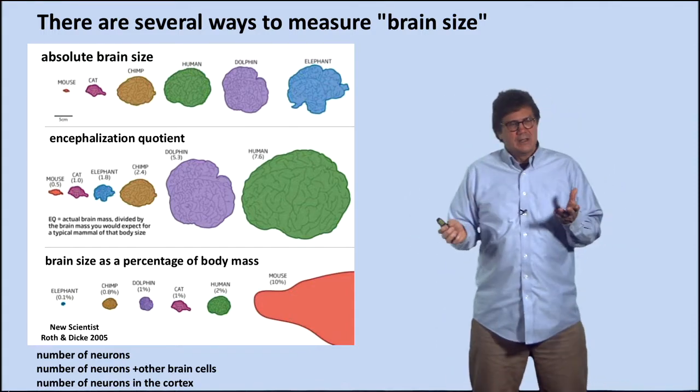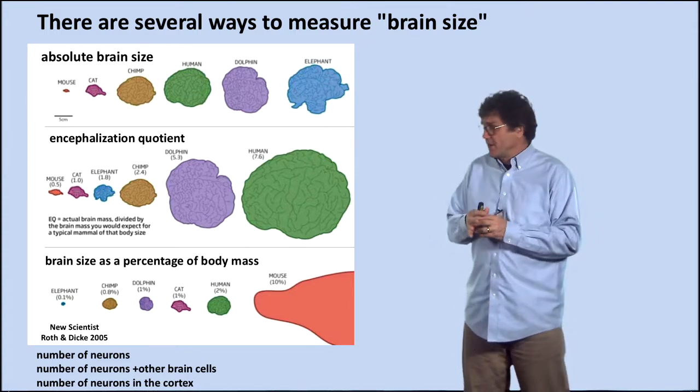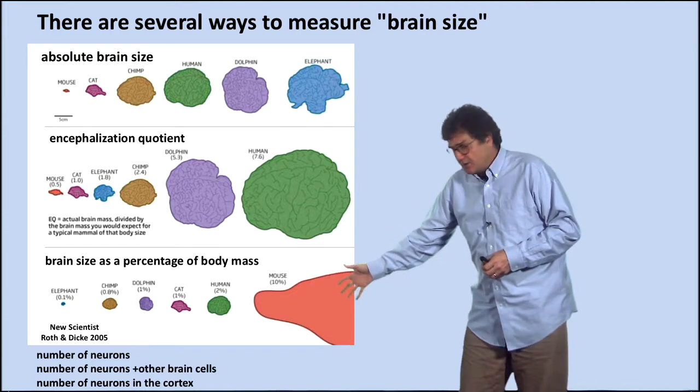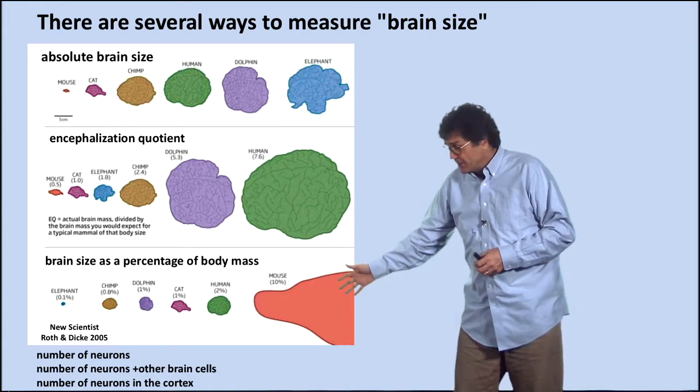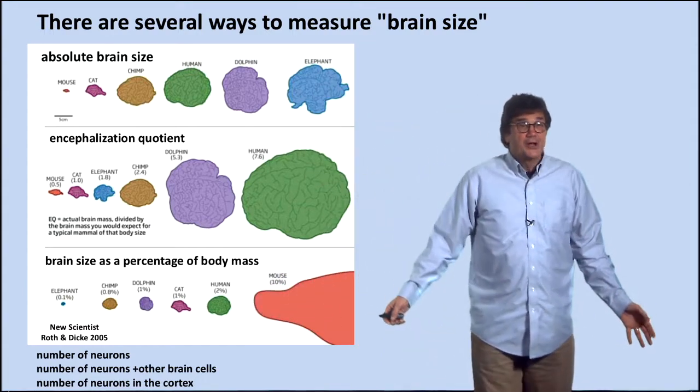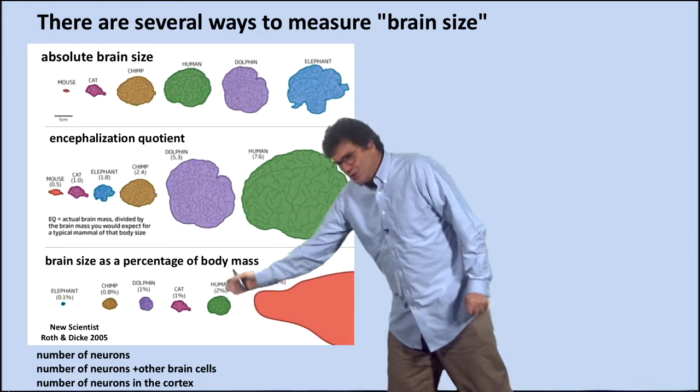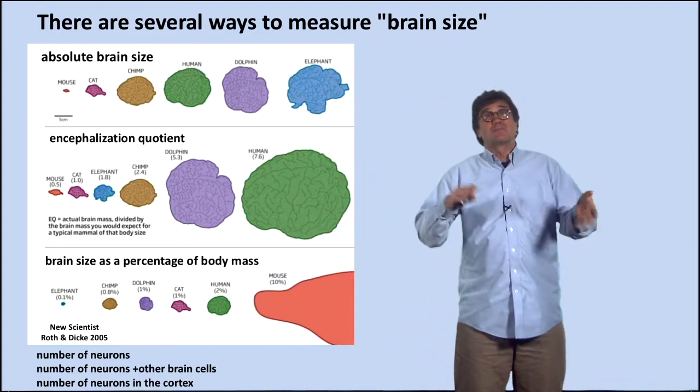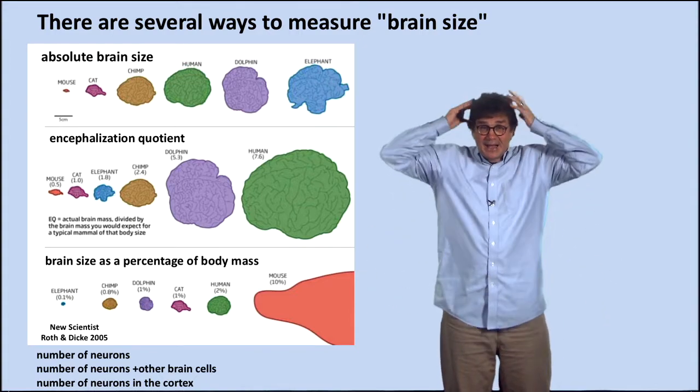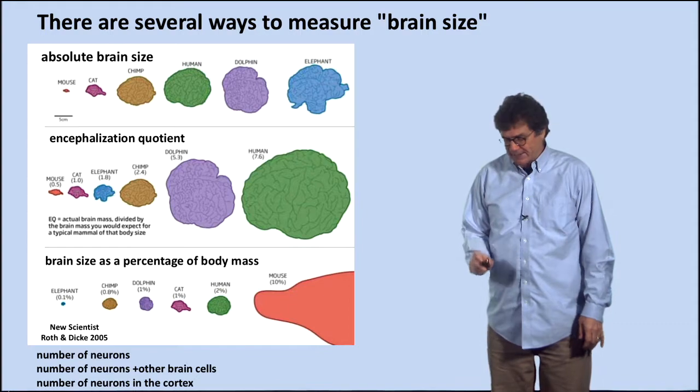Or you could say, wait a minute, let's just talk about what fraction of your body is the mass of your brain. And that's what this is, in which case a mouse has about eight or ten percent of its body is made out of brain. Ours is two percent. Another way, alternative ways to measure brain size is the number of neurons in your brain, or the number of neurons plus other glial cells that you have in your brain, or the number of neurons on the outside, on the cortex. All different ways to measure brain size.